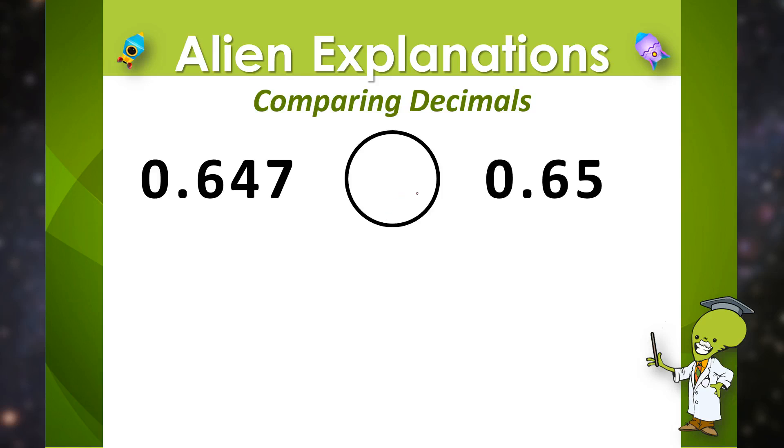Now if we look at the two numbers we can see that this number 647 thousandths has more digits than 65 hundredths. But just because it has more digits doesn't mean that it has the largest value.